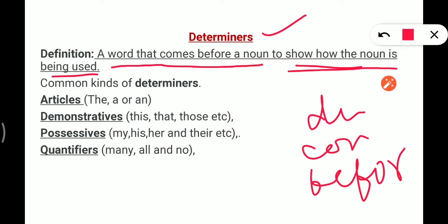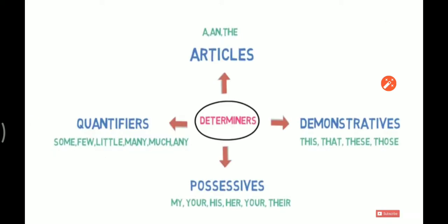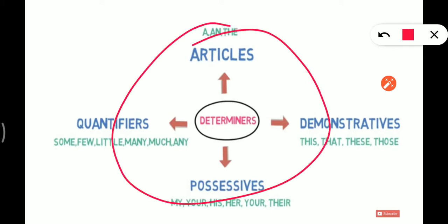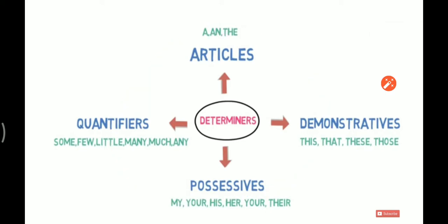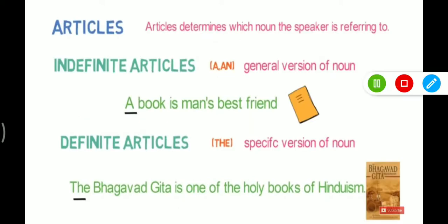Let's know about its kinds. So there are four kinds. Number one is articles, then demonstratives, then possessives, then quantifiers. Let's discuss them one by one. Now here is the chart that you have to make on your notebooks. This is the chart in this way you will make your chart.